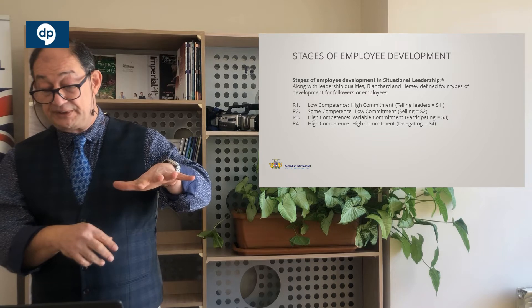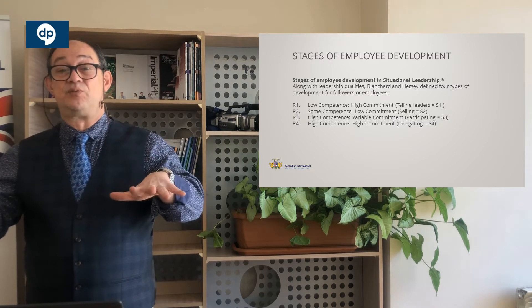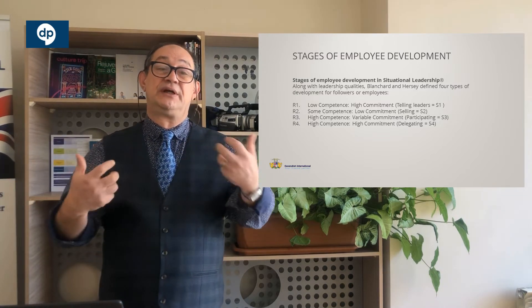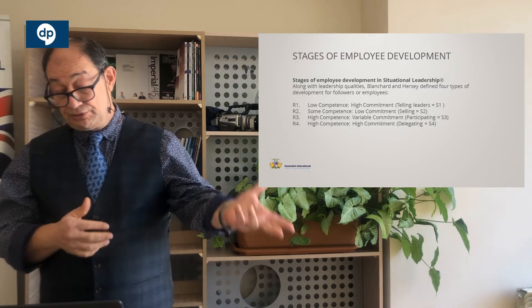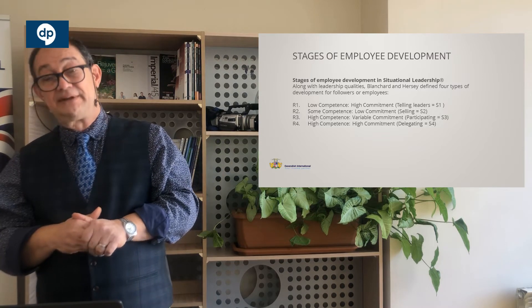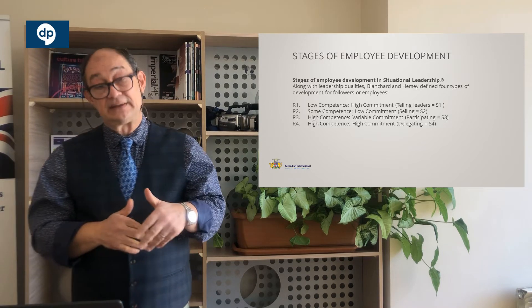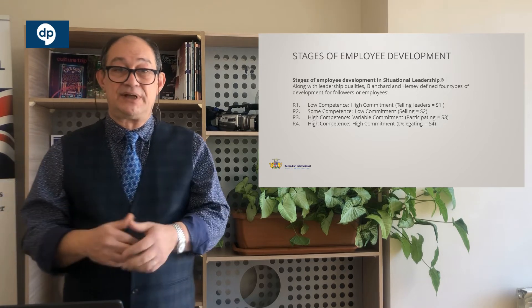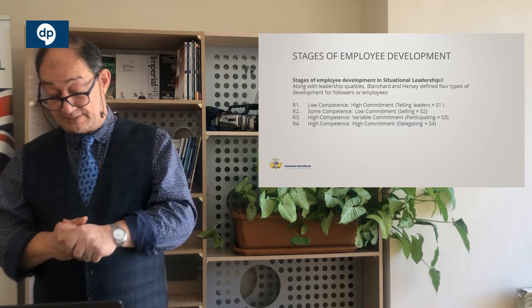R2 is where team members have some competence but commitment is low. The selling approach works here — you engage and excite them to bring them into the program and build their commitment higher. Then R3 is high competence — they know their job — but with variable commitment; they're not getting fully into the project. The participating style works here: you work with them because they are drifting a bit, but you cannot just leave it to them.